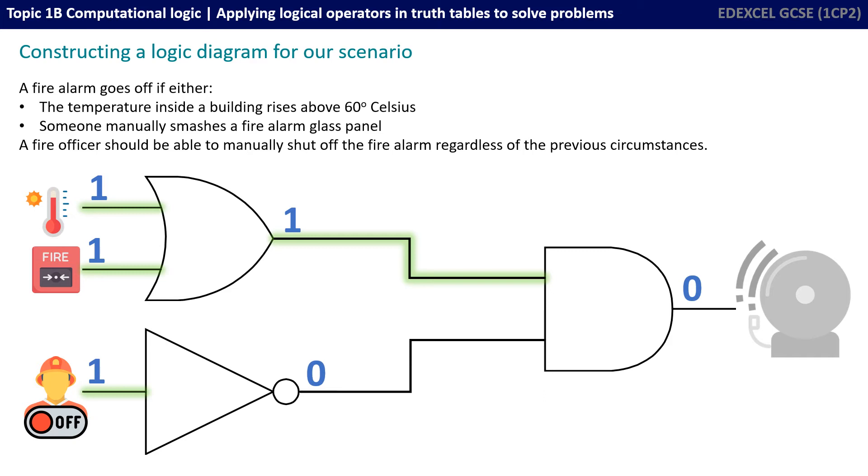The NOT gate flips that 1 to a 0 and that now means the AND gate is receiving a 1 and a 0 which means the output from it must be 0. So, the fire alarm turns off.